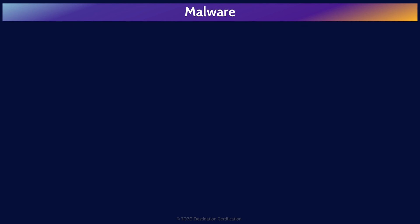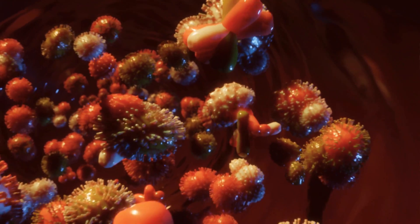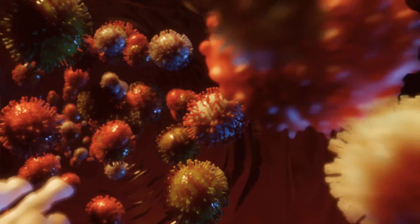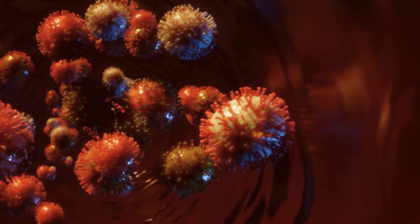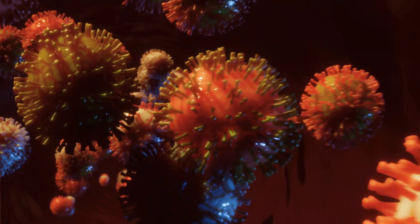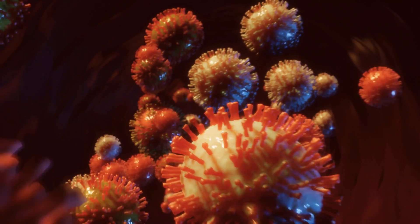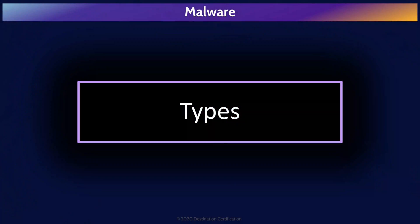Let's start by defining malware. Malware is any software that is intentionally written to do something malicious or harmful to a system, a network, a device, etc. Malware is the encompassing term for all the different types of malicious software. I'm going to provide very concise definitions of the characteristics of each type of malware. Keep in mind that it is not uncommon for a piece of malicious software to exhibit one or more of these characteristics.